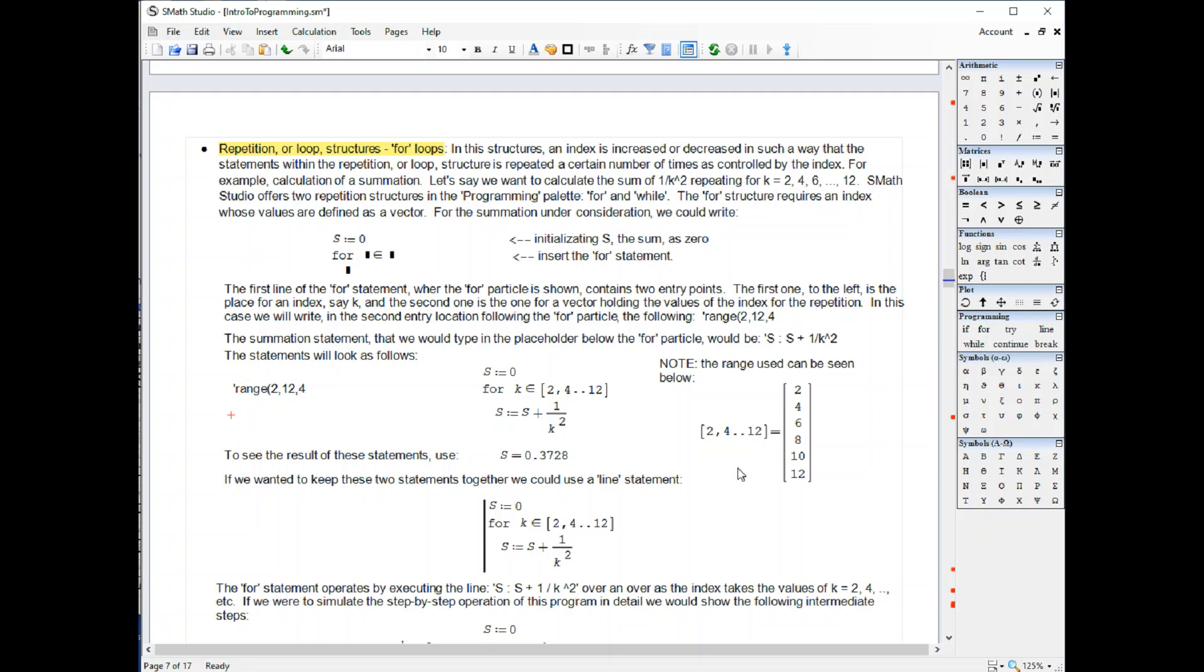If I do that, I'm going to actually do it over here. I'm going to repeat it. I type range parentheses 2, 12, 4, equal. It gives me a vector with the values 2, 4, 6, 8, 10, 12.